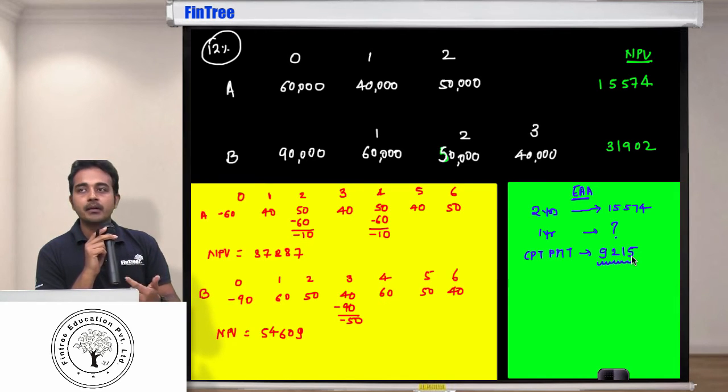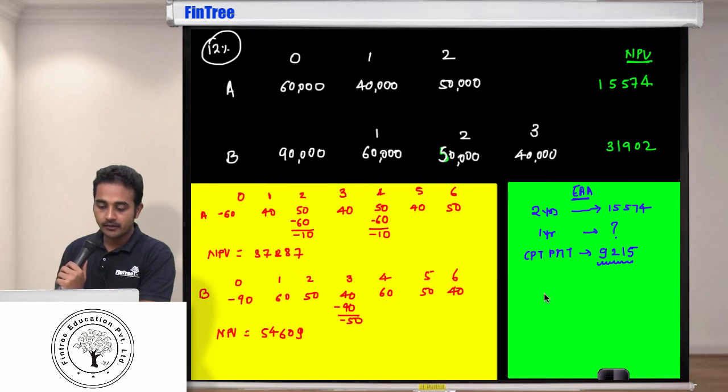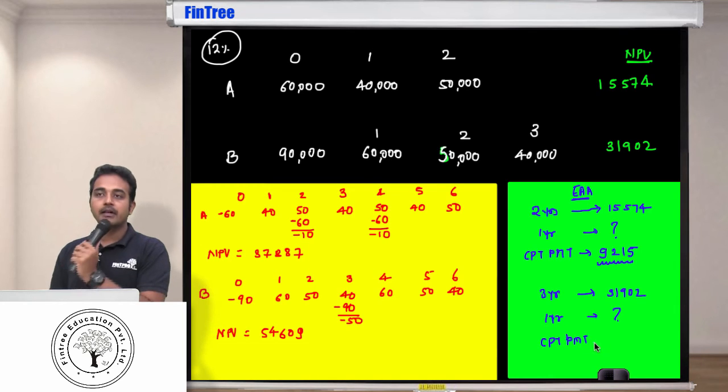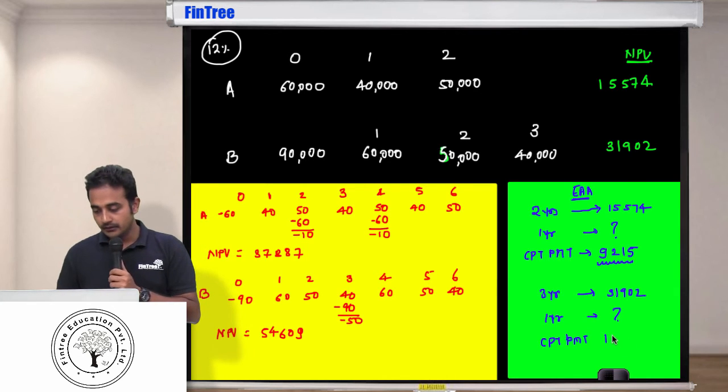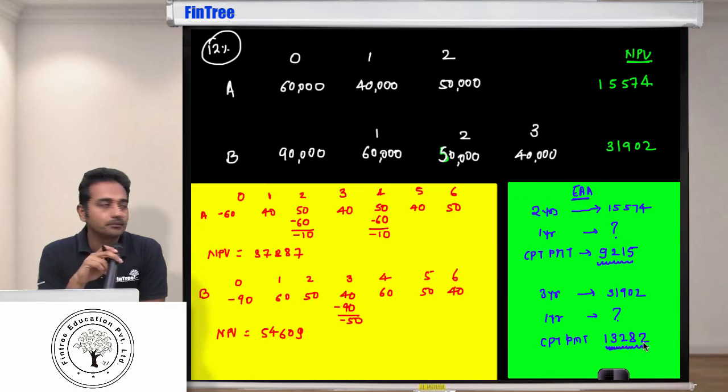How do we solve this here? We will say for three years we have earned 31,902, so how much is an equivalent amount per annum? Again, second clear TVM. Second clear TVM. 31,902 would be present value. 3 N, 12 I/Y, compute payment. 13,282. So 13,282 is your EAA. Have you understood the intuition, the logic?